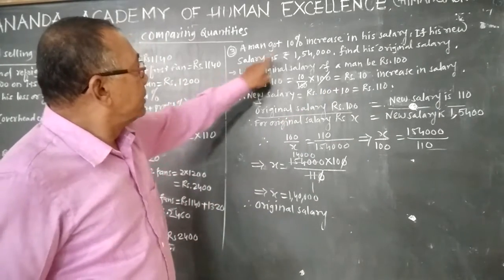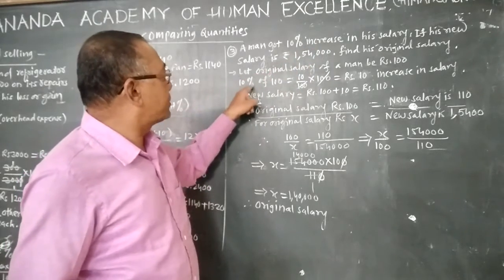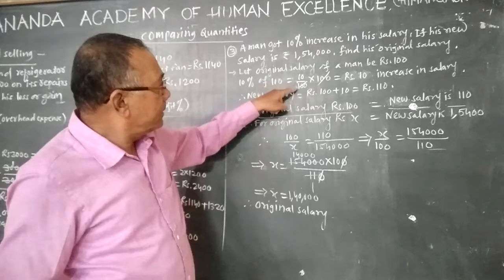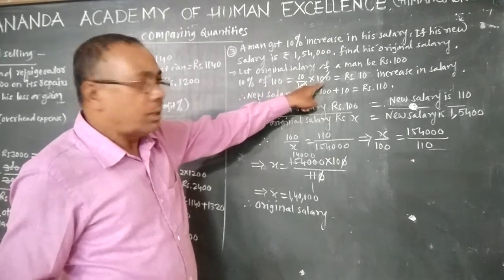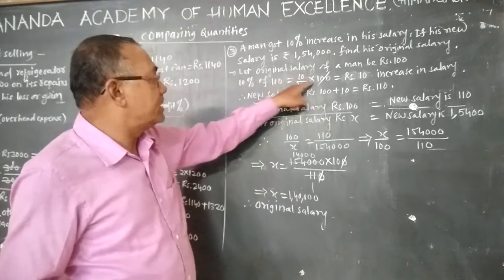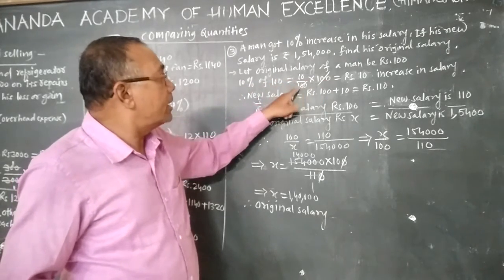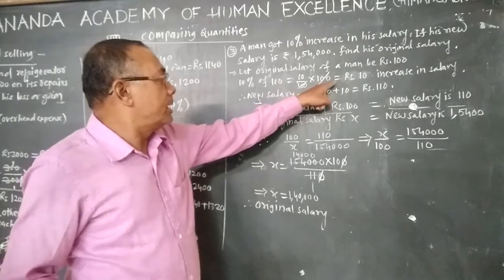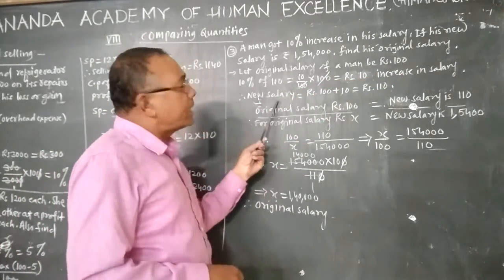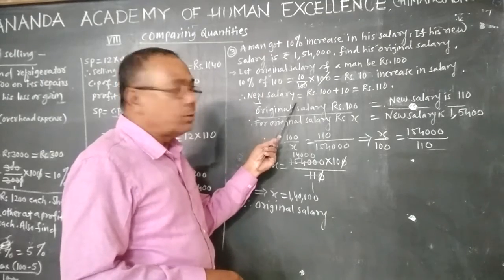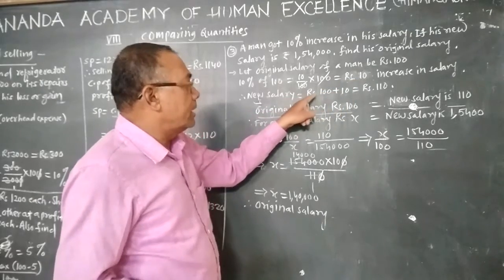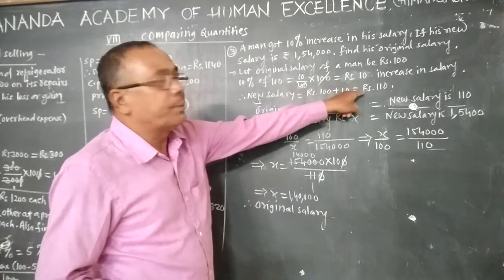A 10 percent increase is given, so 10 percent of 100 equals 10 divided by 100 into 100, the 100s cancel, and we get rupees 10 increase in salary. Therefore, the new salary equals original salary rupees 100 plus increment of 10, so the total new salary will be rupees 110. So when original salary was rupees 100, after 10 percent increment we get new salary as rupees 110.